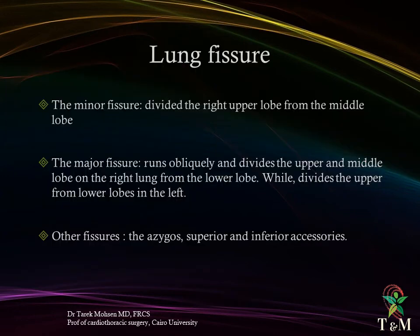Lung fissures: the minor lung fissure divides the right upper lobe from the middle lobe. The major fissure runs obliquely and divides the upper and middle lobe on the right side from the lower lobe, while on the left it divides the upper from the lower lobe in the left hemithorax.